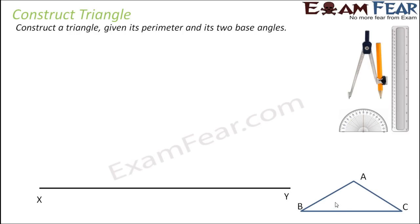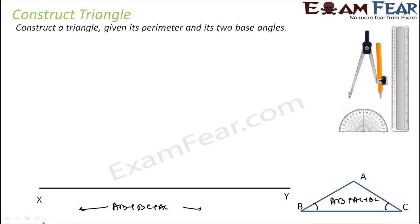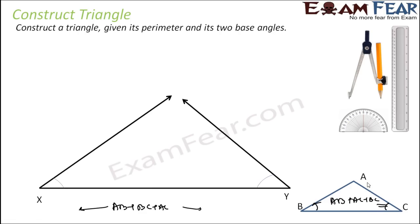So the given information is: AB plus AC plus BC — that is the perimeter — is given, along with two angles. So let us draw a line segment XY with the length AB plus BC plus AC. Then, since two angles are given — angle B and angle C — we will draw these two angles.